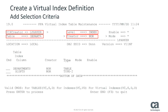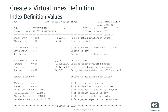The Departments table in the existing DB2 catalog index display. To create the Virtual Index Definition, Lynn specifies VC for Virtual Create next to the Departments table and presses Enter. Lynn arrives at the Virtual Create Index panel, which is populated with default values. To select key columns, Lynn specifies a Y in the Key Select field and presses Enter.